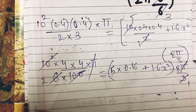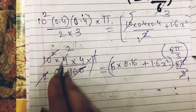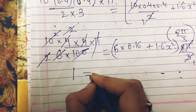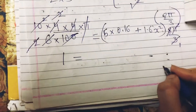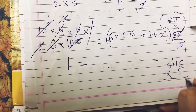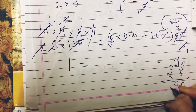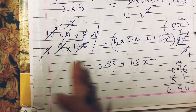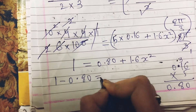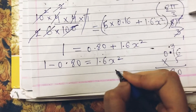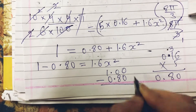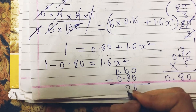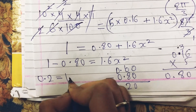The π from both sides gets cancelled. After further cancellation, we have: 5 × 0.16 = 0.80 on the left equals [something + 1.6x²] on the right. Moving terms: 1 − 0.80 = 1.6x². So 1.00 − 0.80 = 0.20, giving us 0.2 = 1.6x².